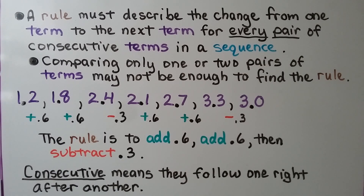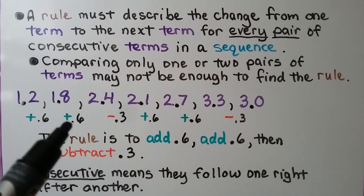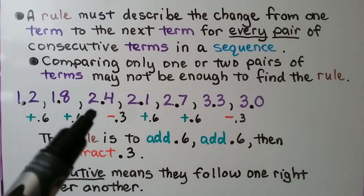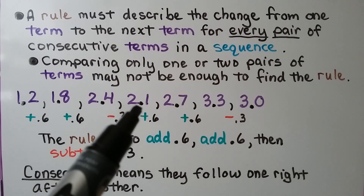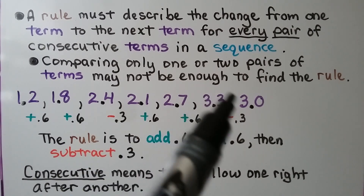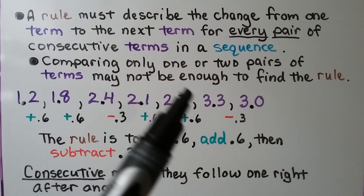Comparing only one or two pairs of terms may not be enough to find the rule. For example: 1 and 2 tenths, 1 and 8 tenths — we added 6 tenths. The next term is 2 and 4 tenths — another 6 tenths added. If we had stopped here, we'd think the rule is add 6 tenths. But continuing on, we see a decrease: we subtract 3 tenths. Then we add 6 tenths again, add 6 tenths again, then subtract 3 tenths. So the rule is: add 6 tenths, add 6 tenths, subtract 3 tenths. A rule can include both addition and subtraction, or even division and multiplication. Consecutive terms are terms that follow one right after another.